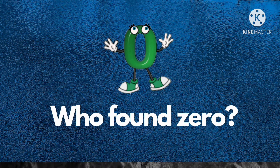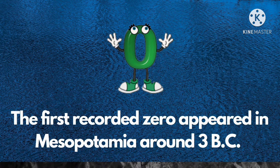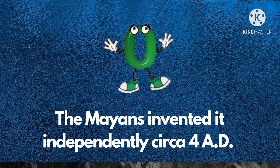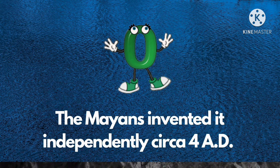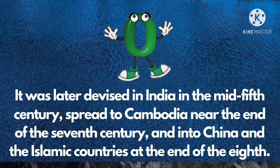Who found zero? The first reported zero appeared in Mesopotamia around 3 BC. The Mayans invented it independently in circa 4 AD. Then it was later devised in India in the mid-5th century.